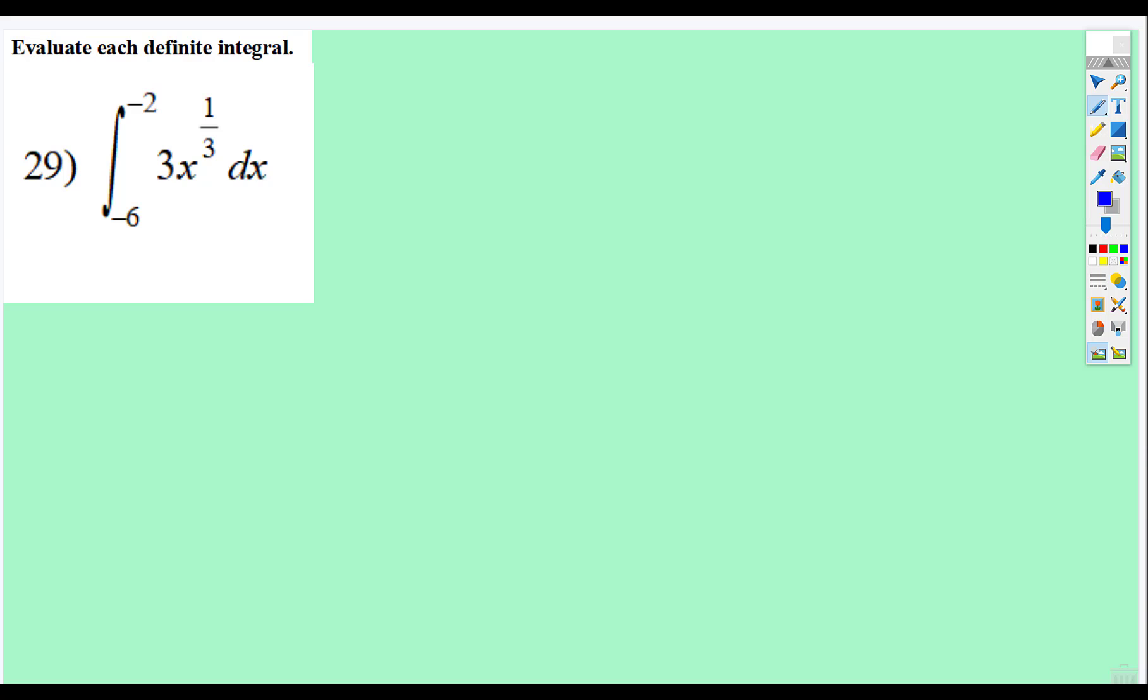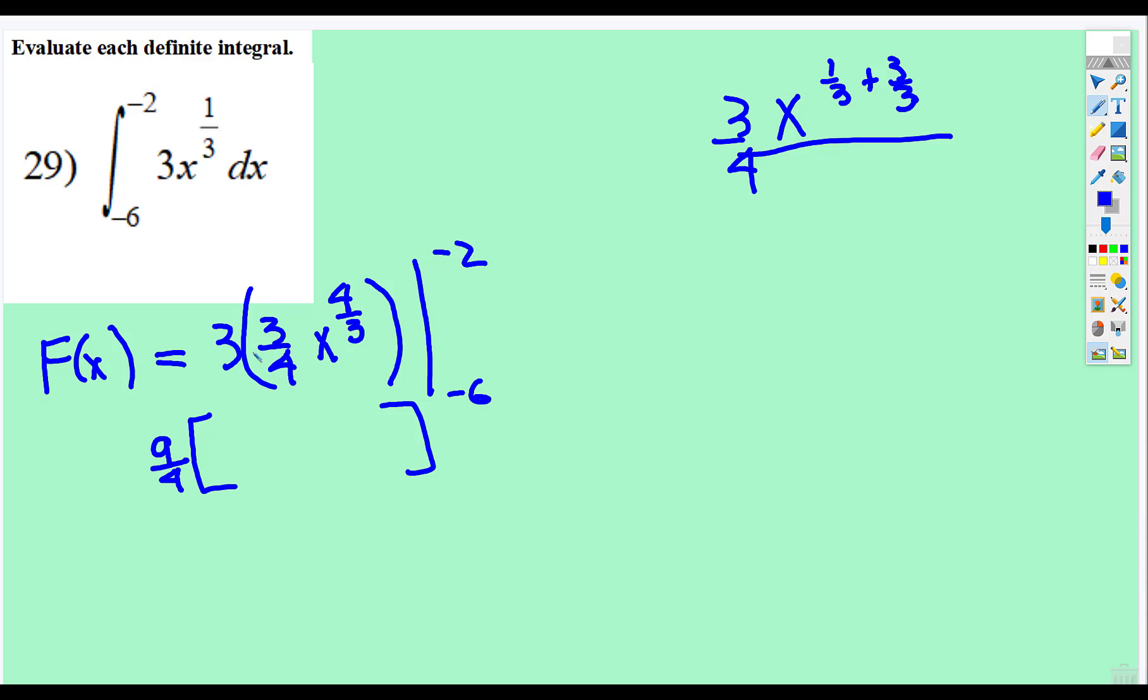All right, so here's a constant out front, so be careful with those. And then when we integrate, we're going to add 1, that's 4 thirds, so we end up multiplying by the reciprocal. And you could simplify that. In fact, when you do that, just do it this way. 9 fourths, and then put that on the outside so you're not having to multiply each time. Then just do f of b, or f of negative 2, subtract f of negative 6 inside here.